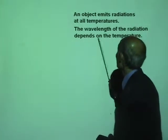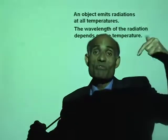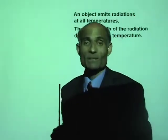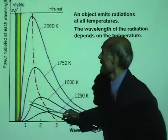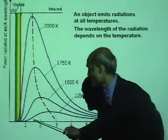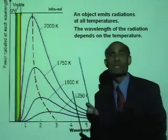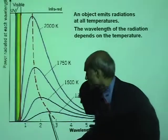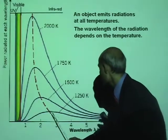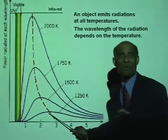An object emits radiations at all temperatures. The wavelength of the radiation depends on the temperature. When you heat an object to a very high temperature, the wavelength of the radiation will be shorter. Here I have a picture of the most prominent wavelength. The bump on the curve represents the most prominent wavelength. Here the most prominent wavelength is about 2.5 micrometers.